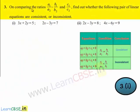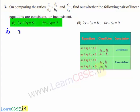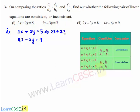Coming to the third problem, on comparing the ratios a1/a2, b1/b2, and c1/c2, find out whether the following pair of linear equations are consistent or inconsistent. The first set of linear equations given is 3x plus 2y is equal to 5 and 2x minus 3y is equal to 7. This equation can be written as 3x plus 2y minus 5 is equal to 0, and the second equation can be written as 2x minus 3y minus 7 is equal to 0.